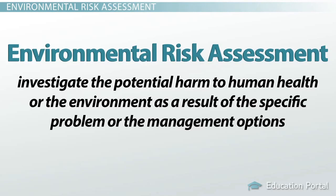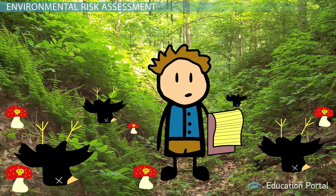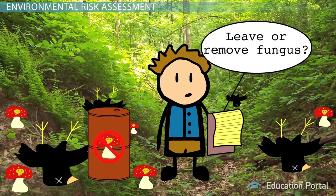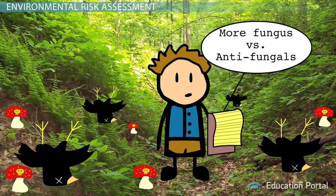When related to the mysterious bird death example, let's say the cause of the bird deaths was found to be a rare and deadly fungus growing in the forest. The environmental risk assessment would first determine what would happen to the remaining birds and other organisms, including humans, if the fungus was not removed. Secondly, it would examine the possible removal solutions for the fungus and determine the potential harm caused by each solution. The estimated harm caused by leaving the fungus would then be compared to the potential harm caused by the removal solutions to determine the overall risk of both possible outcomes.